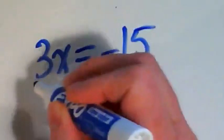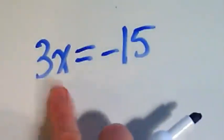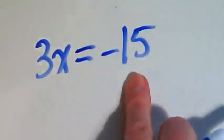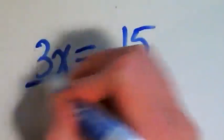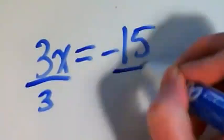Is equal to negative 15. To get that x by itself and to find out what x is equal to, I need to divide both sides by 3.